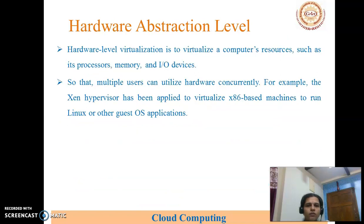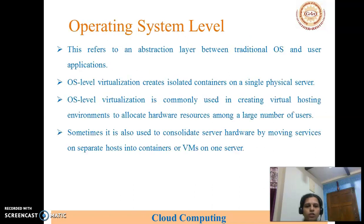The hardware abstraction level virtualizes a computer's resources such as its processors, memory, and I/O devices so that multiple users can utilize the hardware concurrently. For example, the Xen hypervisor has been applied to virtualize x86-based machines to run Linux or other guest operating system applications.